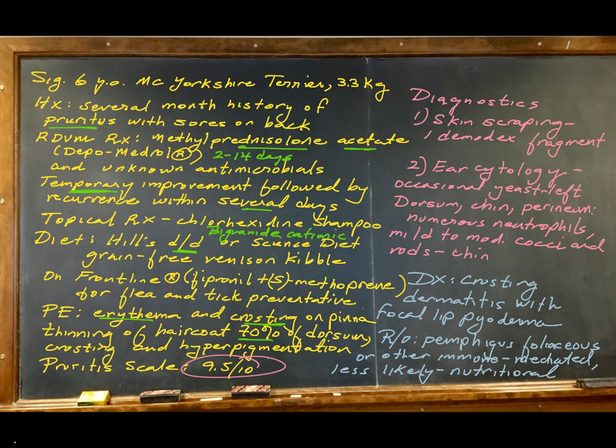The diagnostics in this case that were done included skin scraping, as you do in any pruritic case, and what they found and felt like was probably a normal population of demodex—one fragment of a demodex parasite. Ear cytology showed occasional yeast, and the dorsum, chin, perineum when those were scraped showed numerous neutrophils and mild to moderate cocci and rods on the chin.